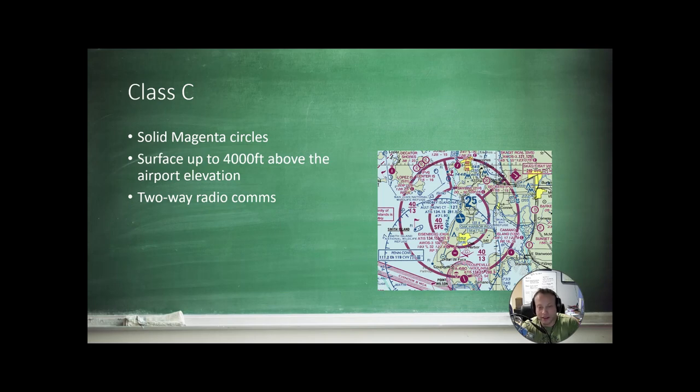Class Charlie airspace is depicted by these solid magenta lines. They go from the surface up to 4,000 feet above the airport elevation, and they do require two-way radio communications. But instead of Class Bravo, where you have to hear cleared to enter, if they just say 2438 Echo, your call sign, then you are cleared to enter. If they say something like aircraft calling over South Kamino, that means they have not acknowledged you yet, and you are not allowed to enter the Charlie.